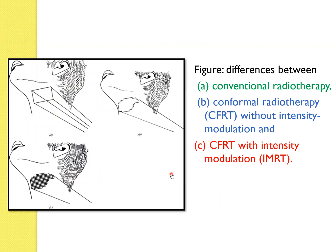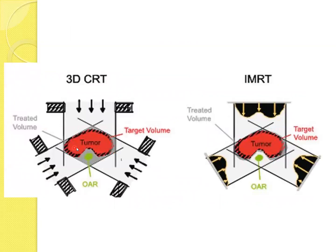And these are some images. And you can see the concavity is never achieved in 3D CRT, whereas in IMRT can easily conform the dose with the tumor.